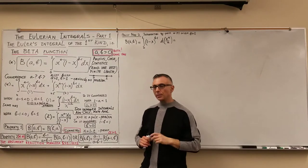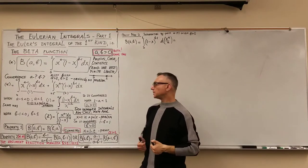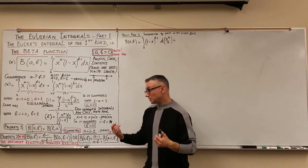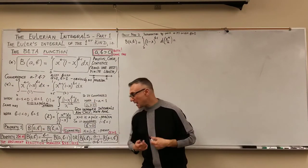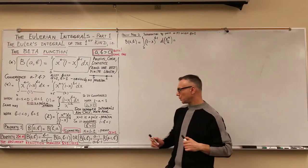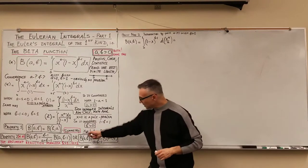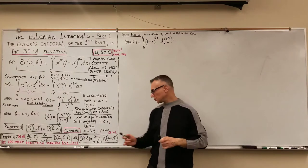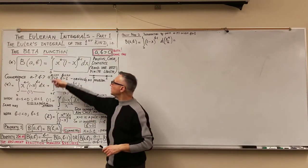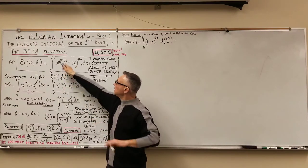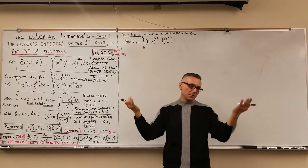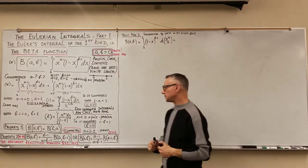The first property: beta of a, b is equal to beta of b, a — this is called the symmetry property. It is very easy to prove by the simple substitution x equals 1 minus t. The 1 minus x becomes just t, and the powers are flipped, giving the same result.